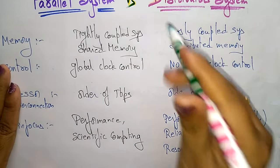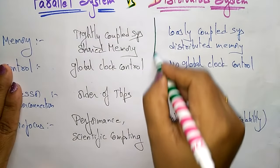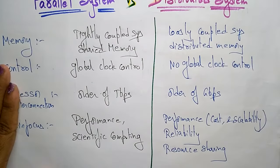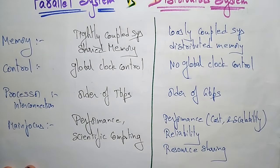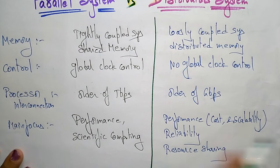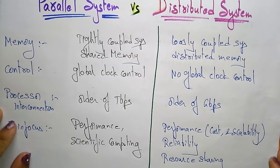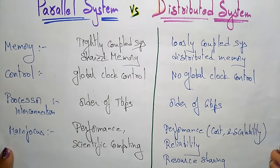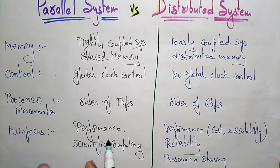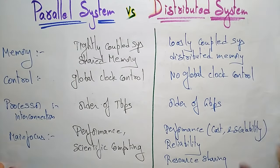So this is the difference between the parallel and distributed systems — in terms of memory, control, and processor interconnection, as well as the main focus of the parallel system and the main focus of the distributed system. Thank you.